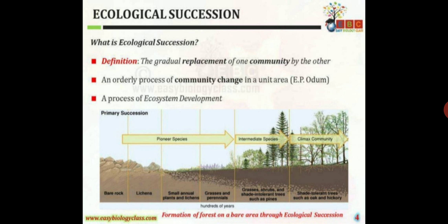Eventually, it slows down as the community reaches a steady equilibrium with the environment. The whole sequence of communities that replace one another in this process is known as Sere. The first serial stage is known as Pioneer Stage. The transitory stages are known as Serial Stages or Developmental Stages. The terminal or matured stage is known as Climax Stage.